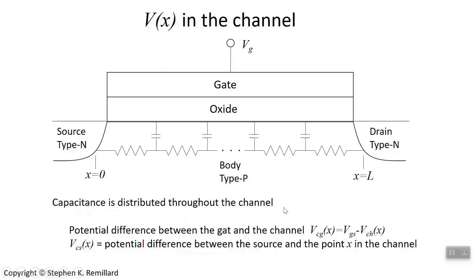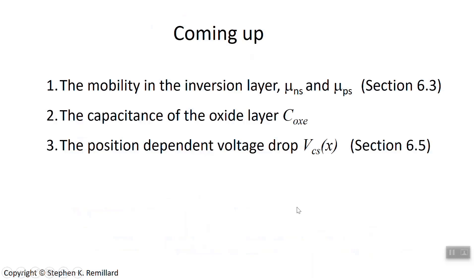There are several things to address to build a complete MOSFET model: surface mobility, which differs from bulk mobility; the capacitance of the oxide layer; and the position-dependent voltage between the channel and source. We'll model the channel as a distributed resistance-capacitance network — resistance all along the channel with distributed capacitance. Once those three things are resolved, we'll have a working MOSFET model and can put together an I-V characteristic.